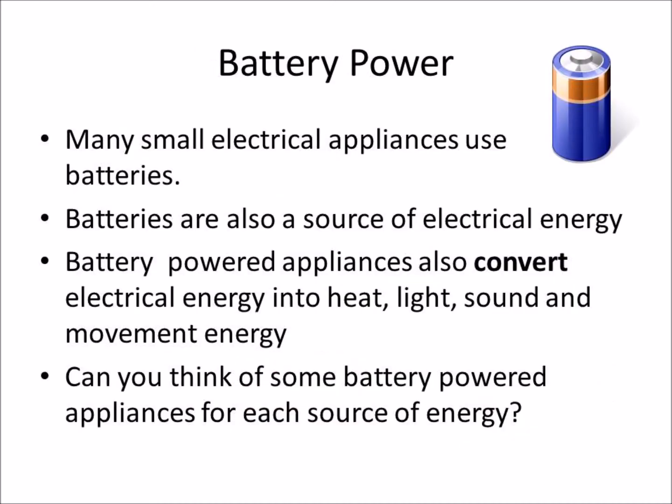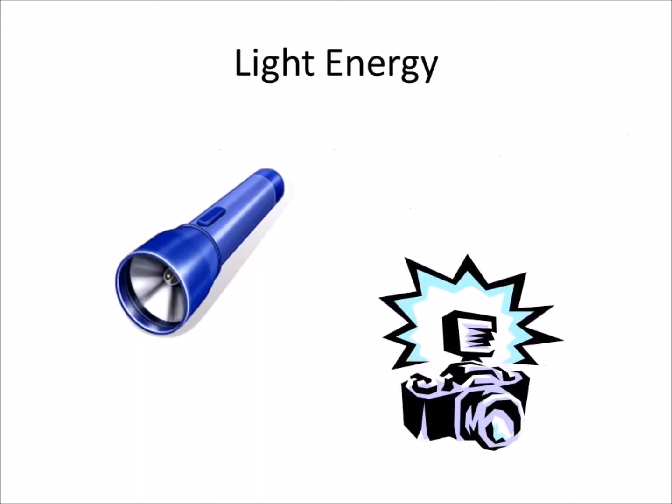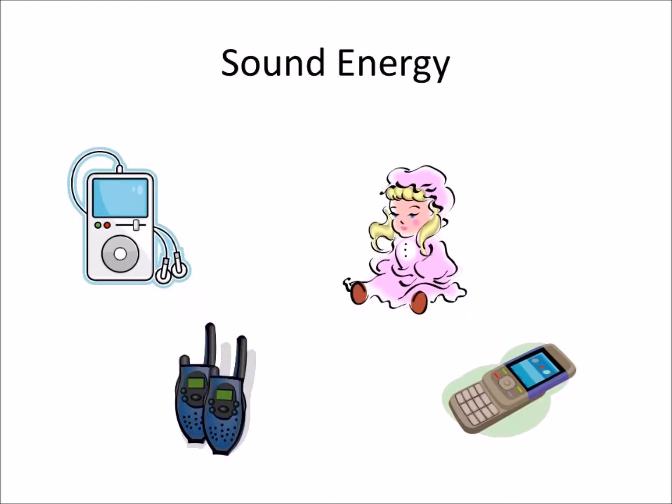Many small electrical appliances use batteries. Batteries are also a source of electrical energy. Torches and cameras can use batteries and transform electricity into light energy.